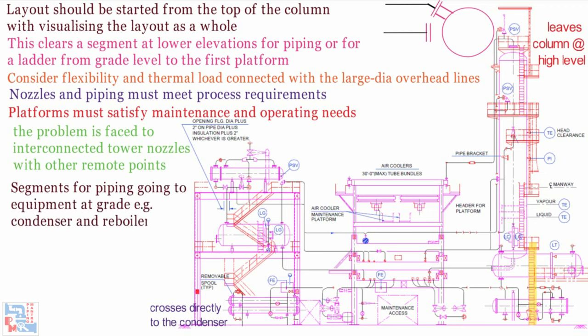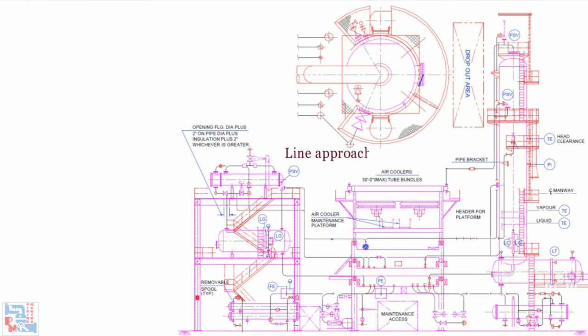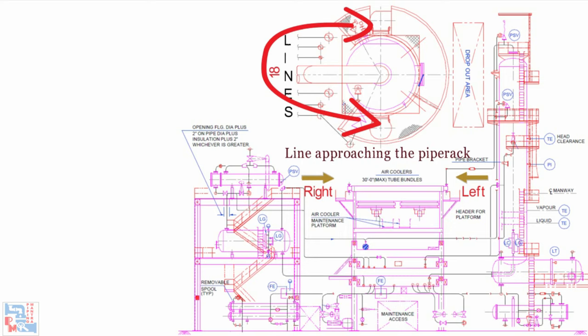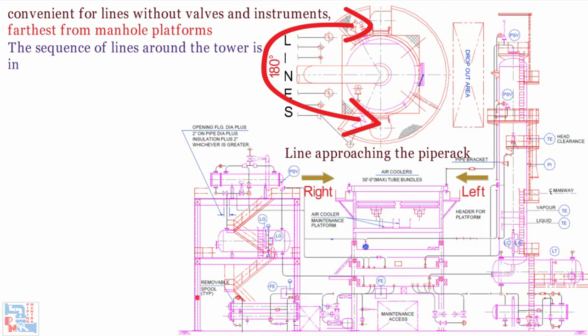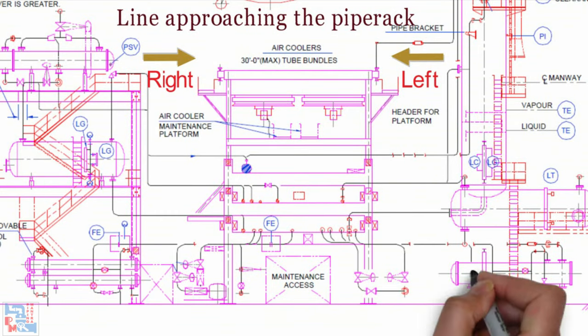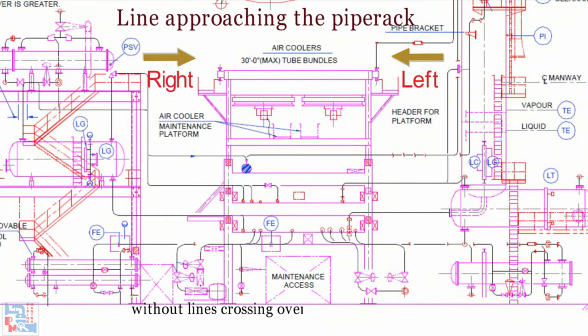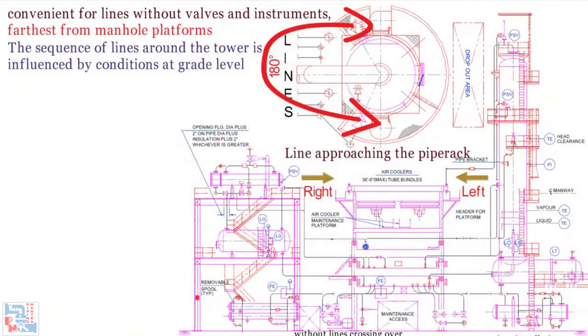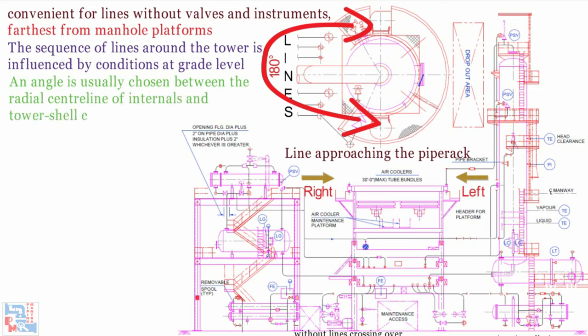Segments for piping going to equipment at grade, for example condenser and reboiler lines are available between ladders and both sides of manhole. Line approaching the yard or pipe rack can turn left or right depending on the overall arrangement of the plant. The respective segments of these lines are between the ladder and 180 degrees. 180 degree is convenient for lines without valves and instruments because this is the point farthest from manhole platforms. The sequence of lines around the tower is influenced by the conditions at grade level. Piping arrangements without lines crossing over each other give a neat appearance and usually a more convenient installation. The correct relationship between process nozzles and tower internals is very important.